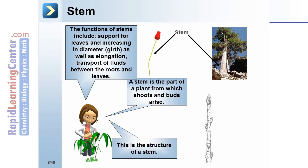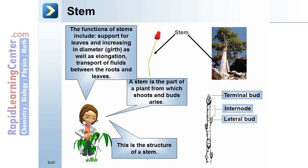The structure of a stem includes the terminal bud, internode, lateral bud, and the node, where buds or leaves attach to the stem.